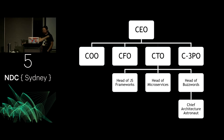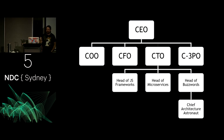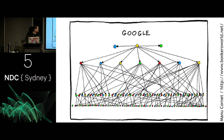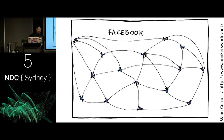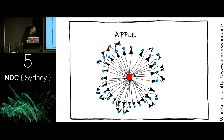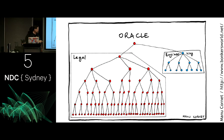Here's an organization chart — this is what all software companies look like now. We've got our architecture astronaut who reports to the head of buzzwords, head of microservices, head of frameworks, who report to the CTO. We've got the CEO, CFO, C3PO reporting to the CEO. There are Manu Cornet's organization diagrams: Amazon, Google, Facebook, Microsoft. Apple under Steve Jobs — one guy in the middle telling absolutely everybody what to do. And then Oracle's organization diagram, where engineering is over here and the Oracle legal department is over there. It's satire that pokes fun at how these organizations work.